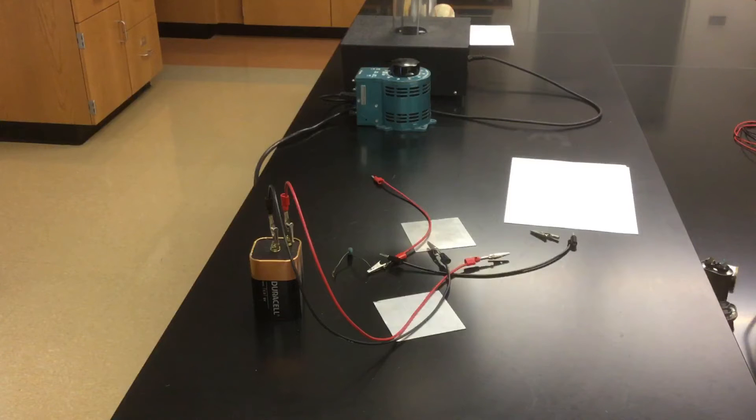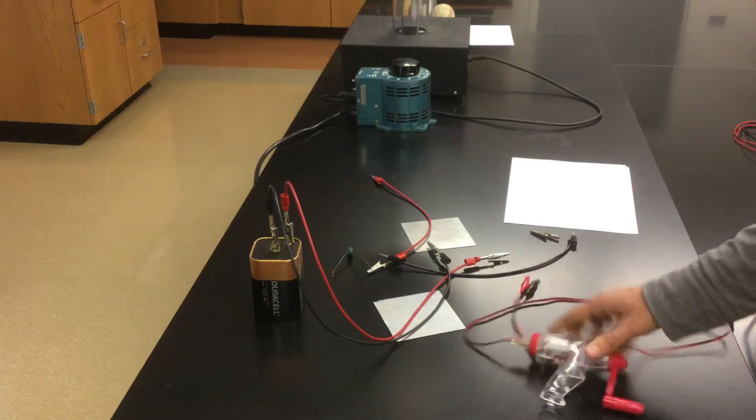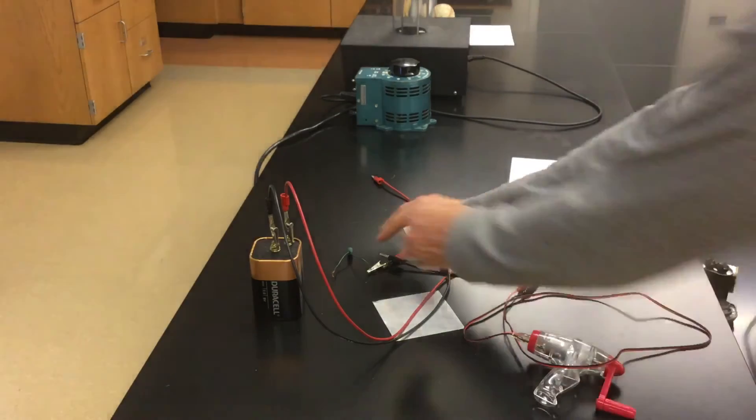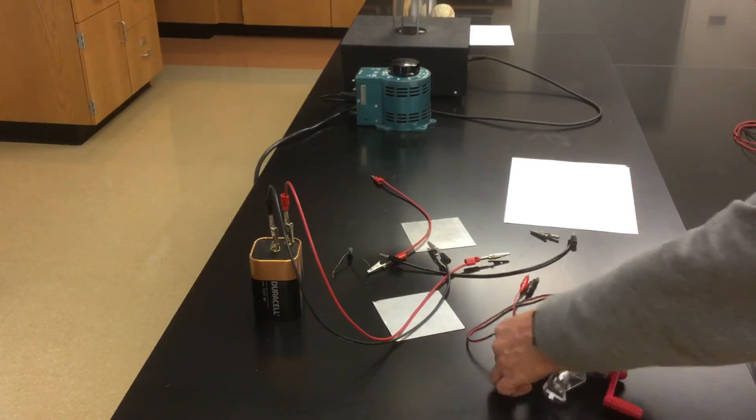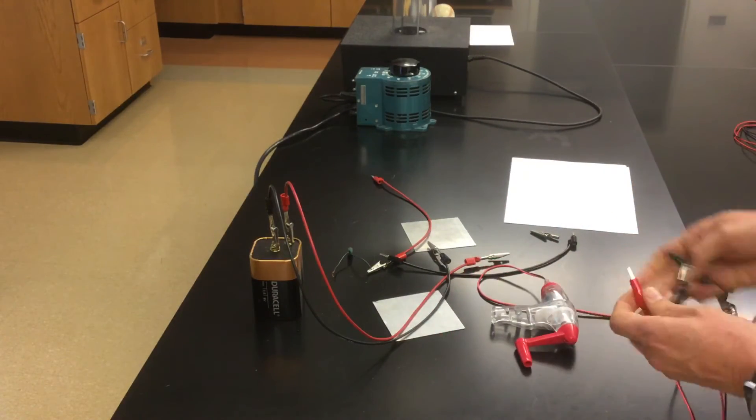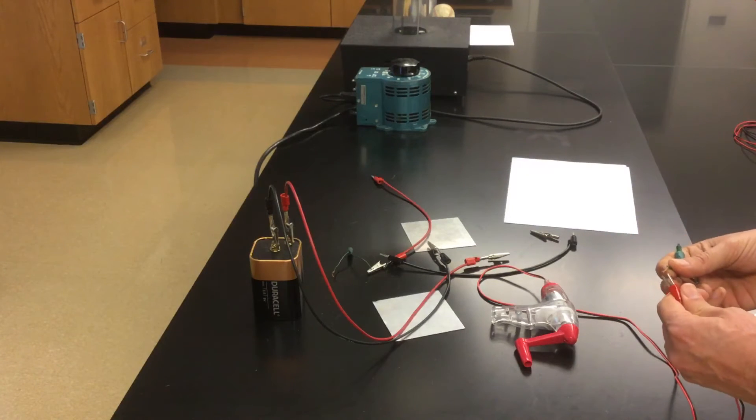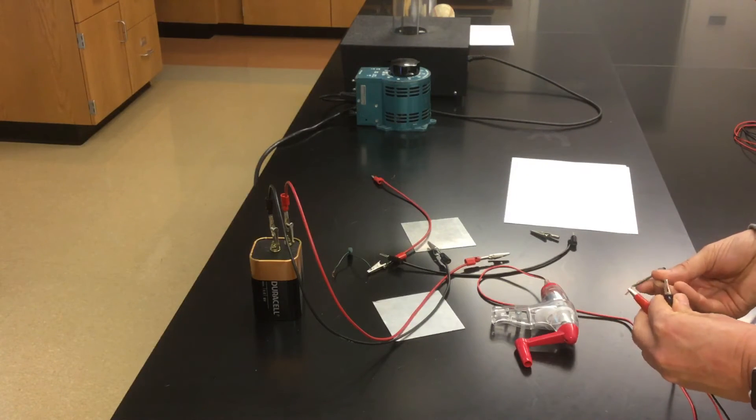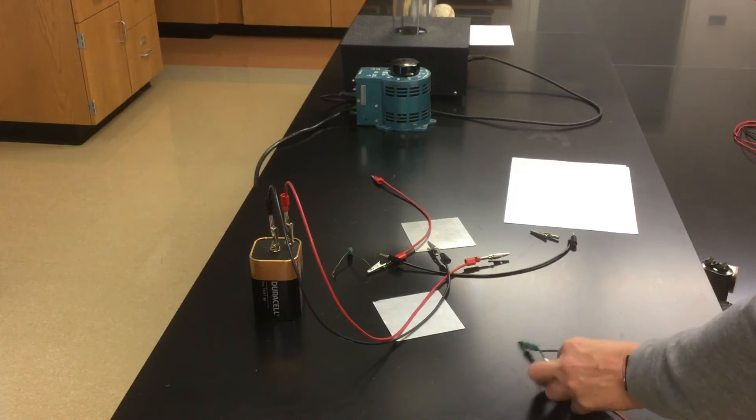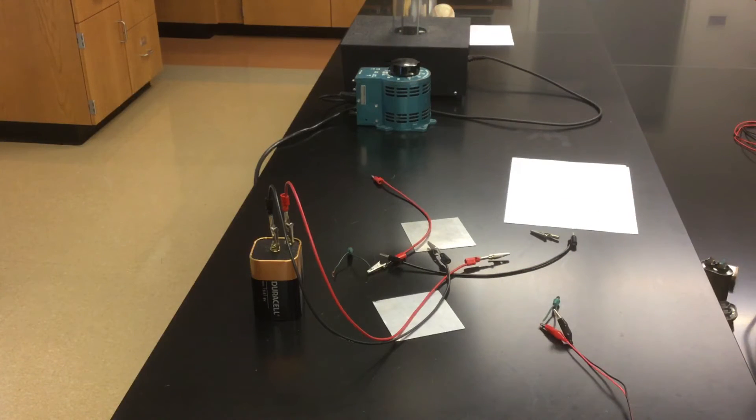Instead of a battery that's used to power the light bulb, I can use a hand-powered generator. So let's take that light bulb, or we can use a green light bulb in this case. Now as long as I crank the handle on my generator at a steady speed, then that should produce a steady voltage and it glows with a fairly consistent brightness to it.